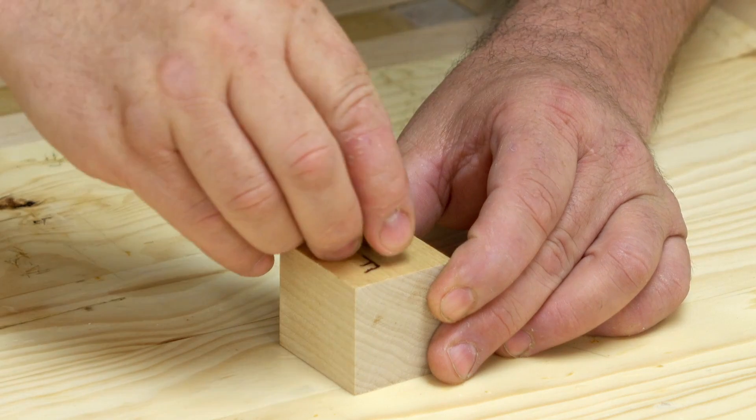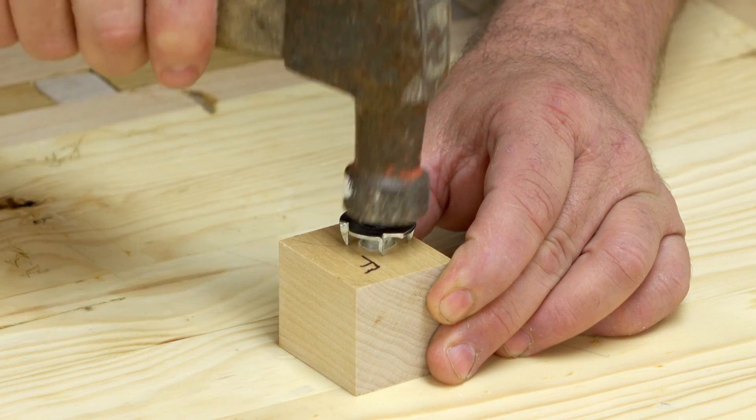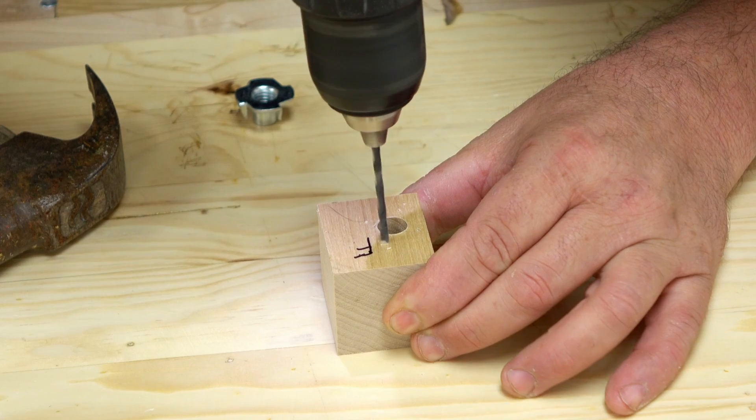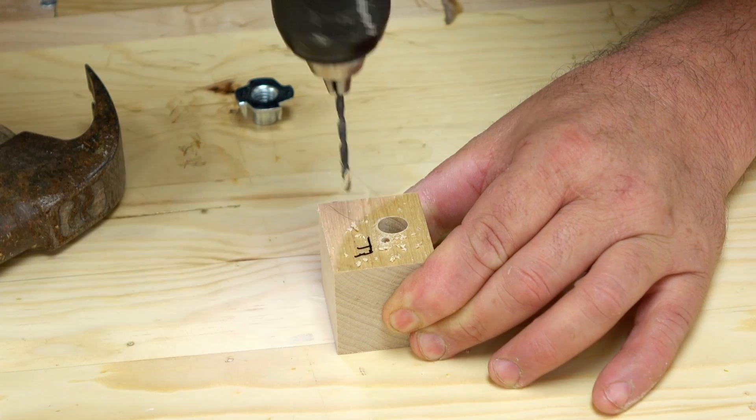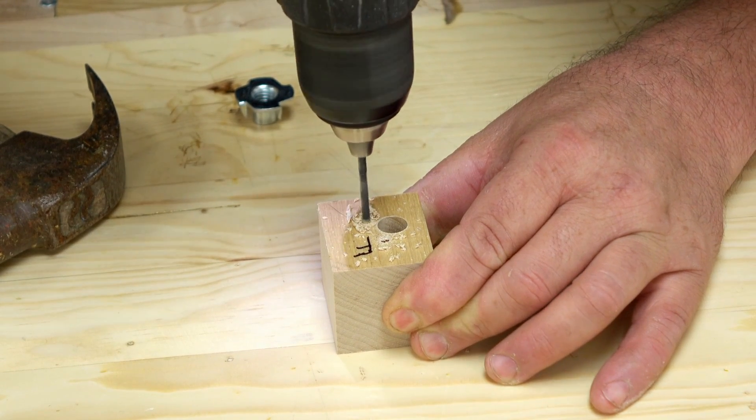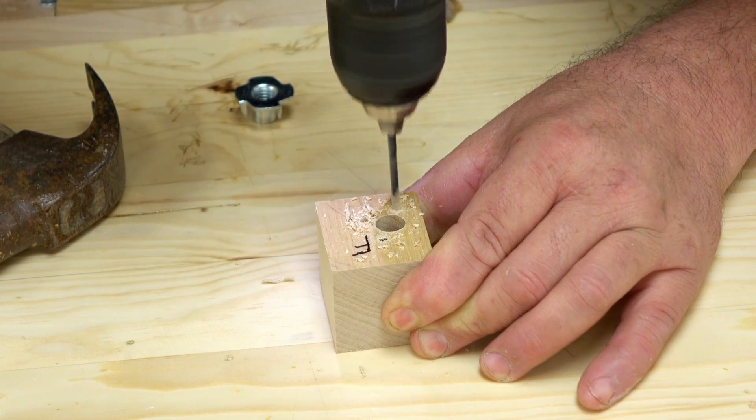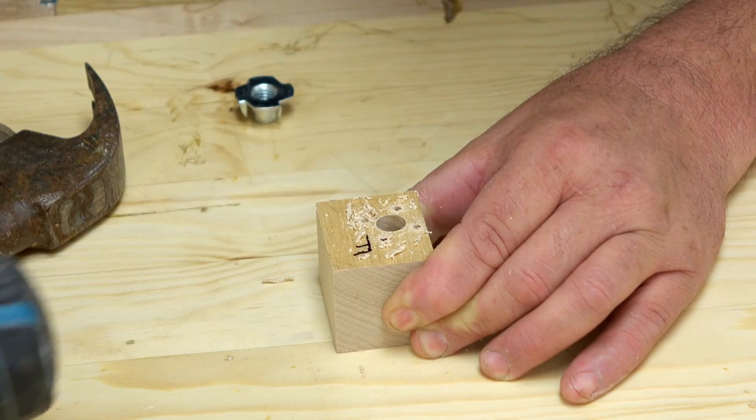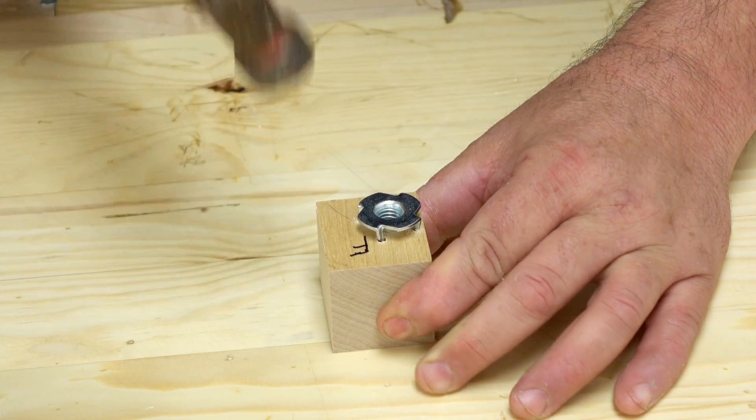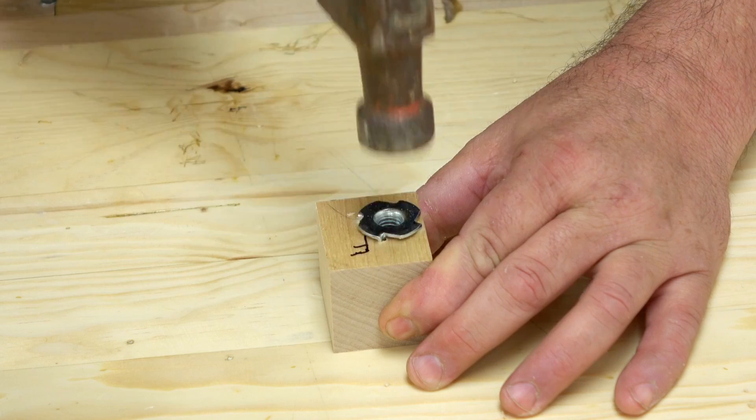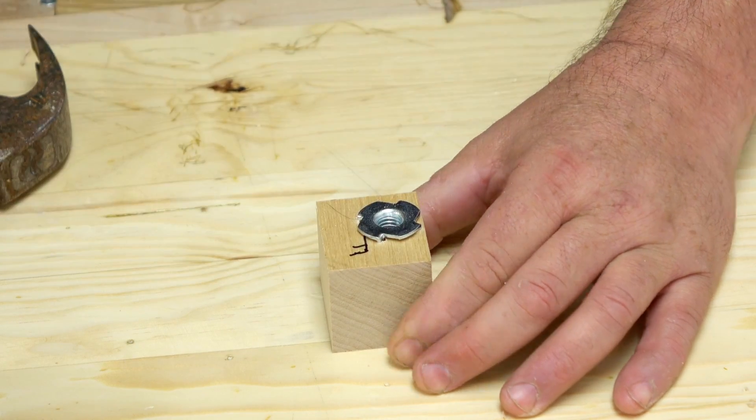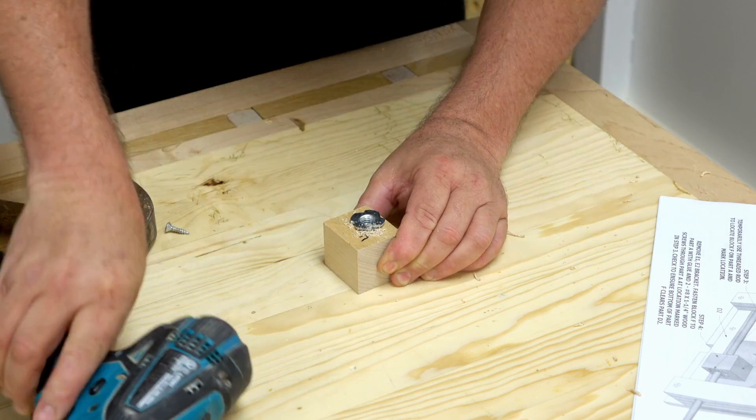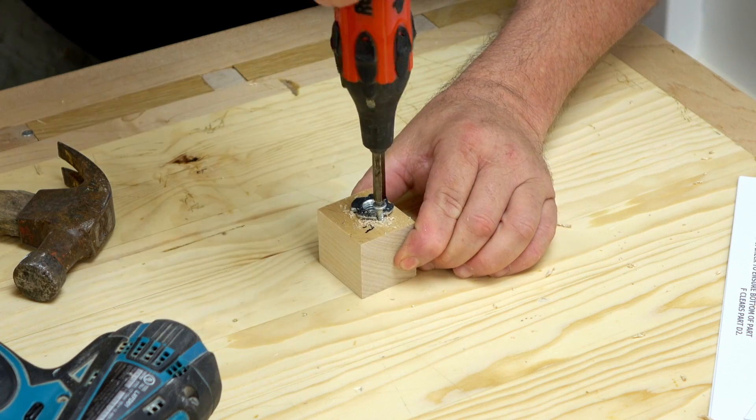To install the T-nut in part F, I'm going to tap it into the wood just slightly so that those teeth make a mark. Then I'm going to drill holes where those marks are so that the teeth will be able to go in there without splitting the wood apart. If you try to do this without drilling those holes, the wood will likely split. Next I want to secure the T-nut in place to make sure that it won't come out. To do that I'm going to drill a pilot hole and drive a three-quarter inch screw in there.